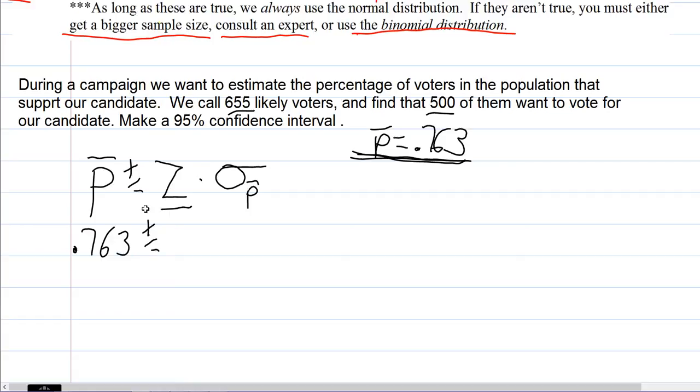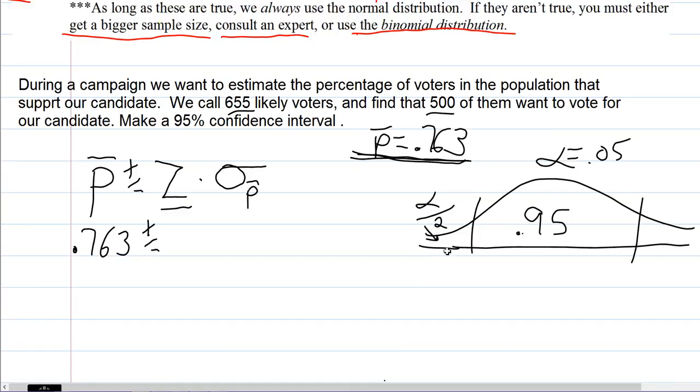Now we need a z-score. To find a z-score for a confidence interval, if we want 95% confident, that 0.95 is our confidence coefficient. Alpha is one minus the confidence coefficient, so that's 0.05. That's the amount that goes out in the tails. Alpha over 2 is what you look up on the z-table. You want 0.025 in one tail, and that tells us our z-score is going to be 1.96.